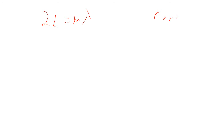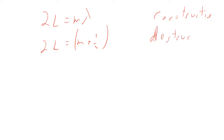Put simply: 2L equals m·lambda — that's constructive interference. If 2L equals (m + 1/2)·lambda, that's destructive interference. These are generic statements for constructive and destructive interference, but they take a slight difference when we're talking about reflecting off of a film like this.